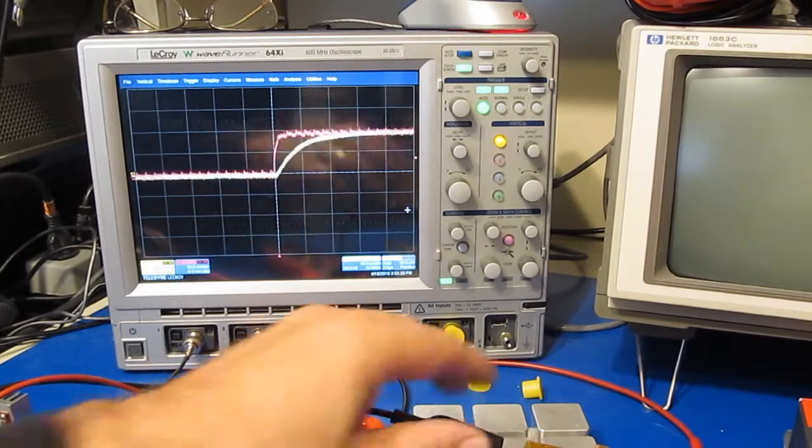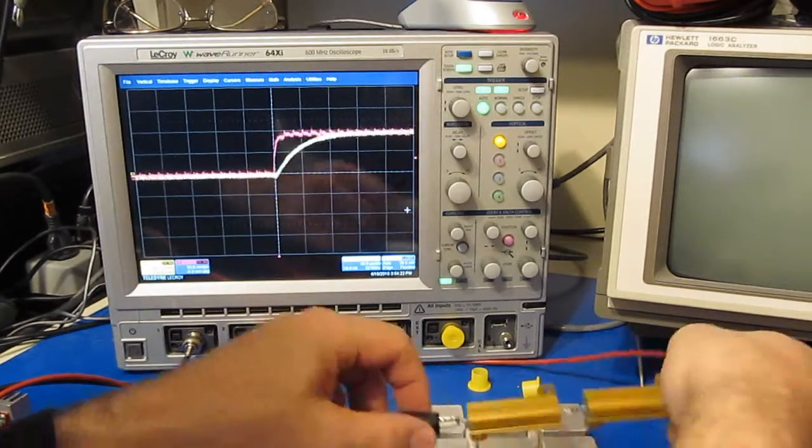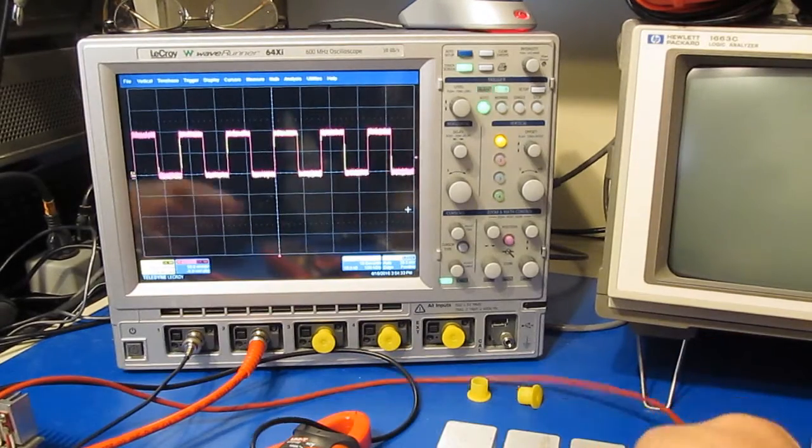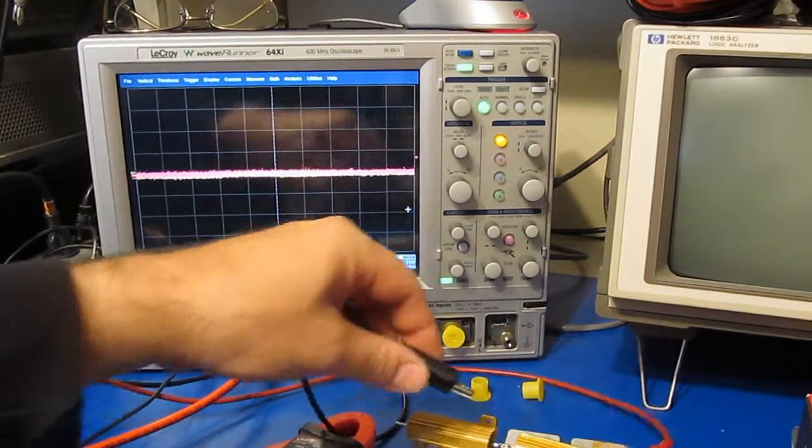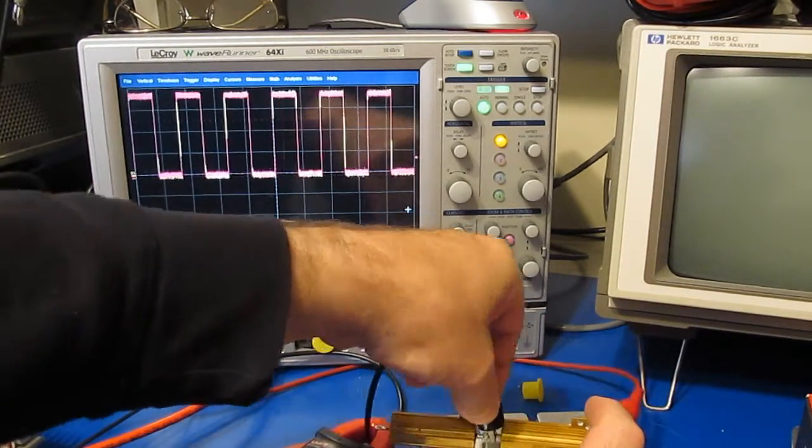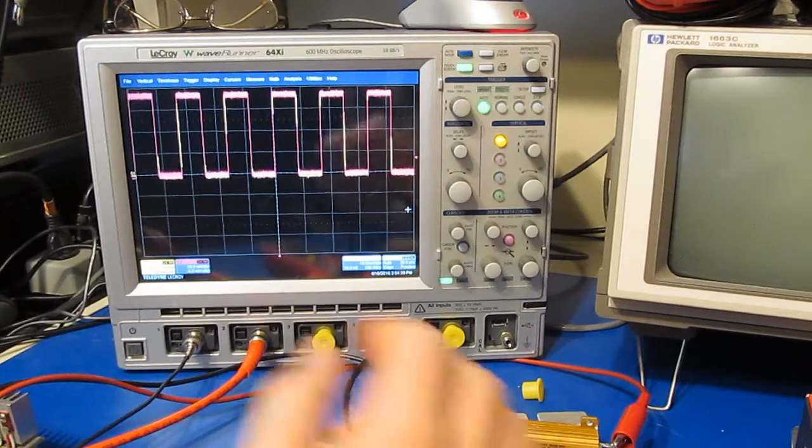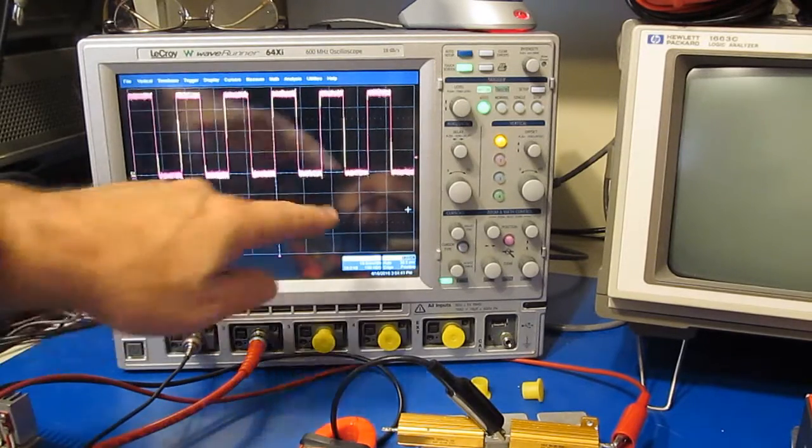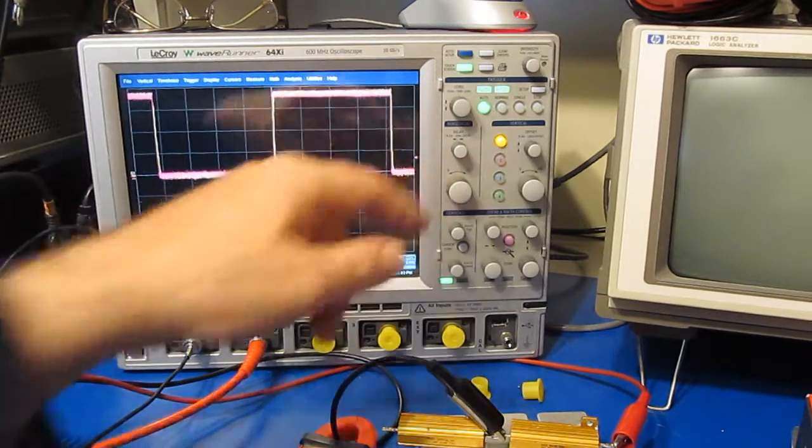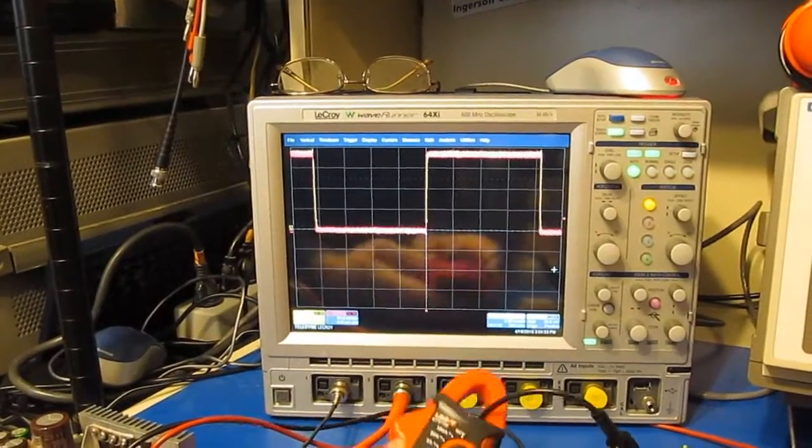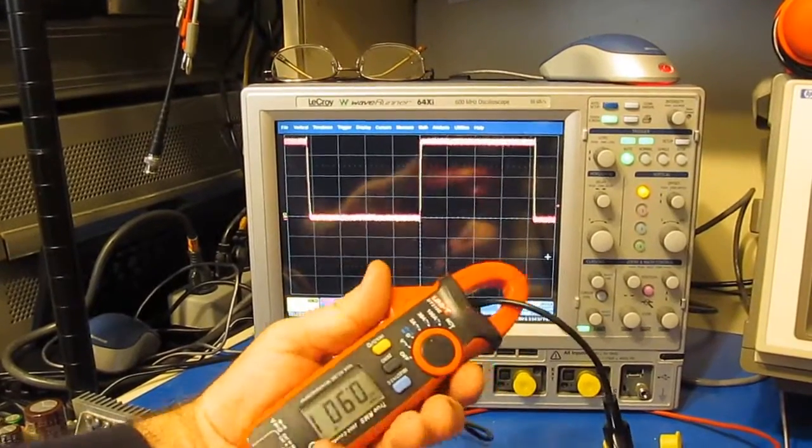Unfortunately there's nothing really you're going to be able to do to improve this. If I want to double the current, for example, I'll just clip onto a single resistor and this is now roughly two amps.